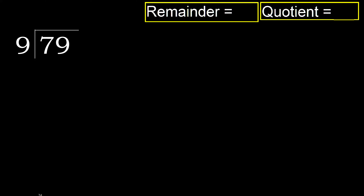79 divided by 9. 7 is less, therefore next. 79 is not less, therefore with 79 — 9 multiplied by which number is nearest to 79?